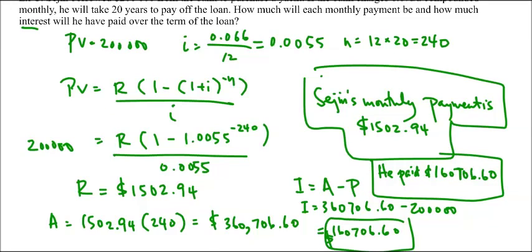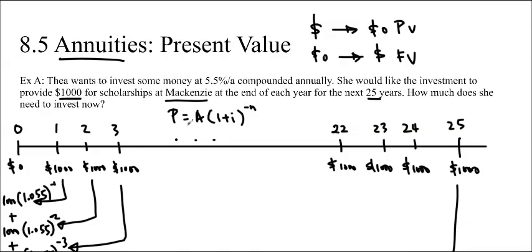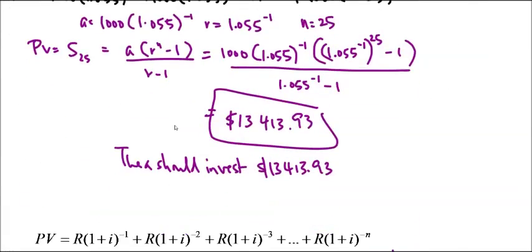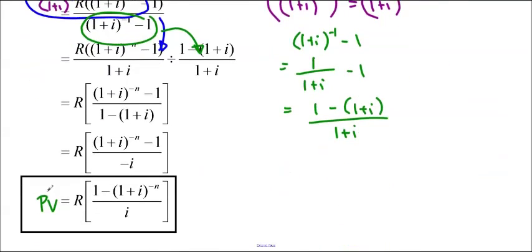In summary, we developed this formula for present value, which you do not need to memorize, but you should memorize the method in which we did it. We get PV equals R times 1 minus 1 plus i to the negative n over i. And we could find any of these variables using the formula. That's about all we did today. I hope you enjoyed it. Thanks for watching, and I'll see you soon. Bye!